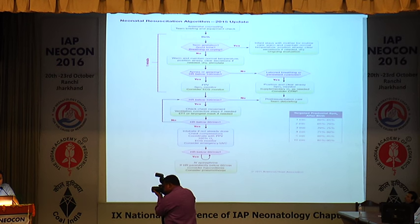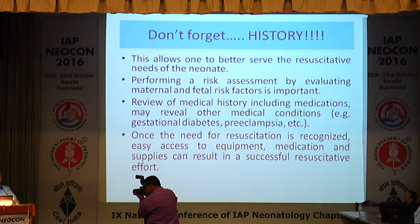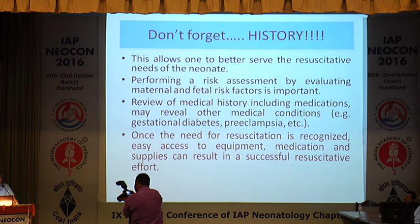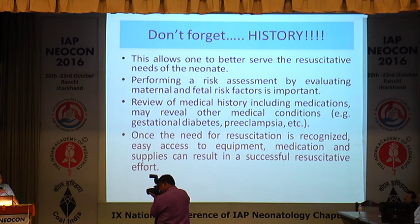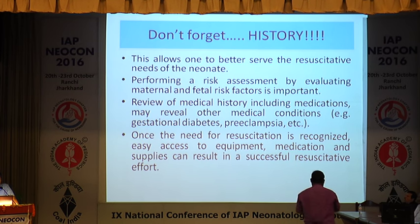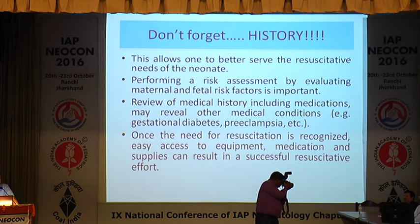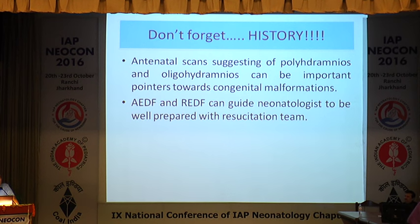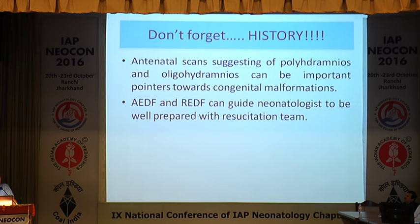Most often we have a baby who comes to us in an extramural NICU, where unlike an intramural baby — where we know all the history beforehand — in these extramural babies, we hardly know anything about them. So one of the team members should spend some time with the family to know the history. This allows us to better serve the resuscitative needs of the neonate if we know whether there was any fetal distress, oligohydramnios, or absent end-diastolic flow. We need to perform risk assessment by knowing the maternal-fetal risk factors — maternal history such as diabetes mellitus in pregnancy, PIH, antenatal scans suggesting oligohydramnios or polyhydramnios, and history of absent or reverse end-diastolic flow — all of which help in preparing for resuscitation.